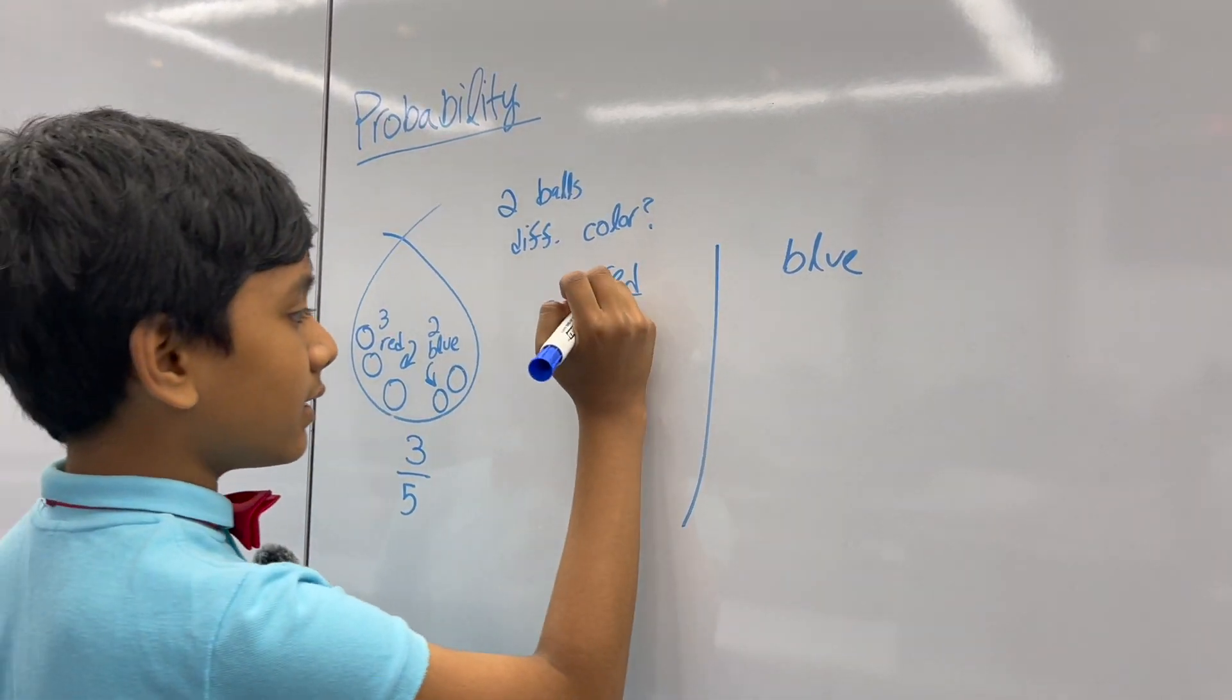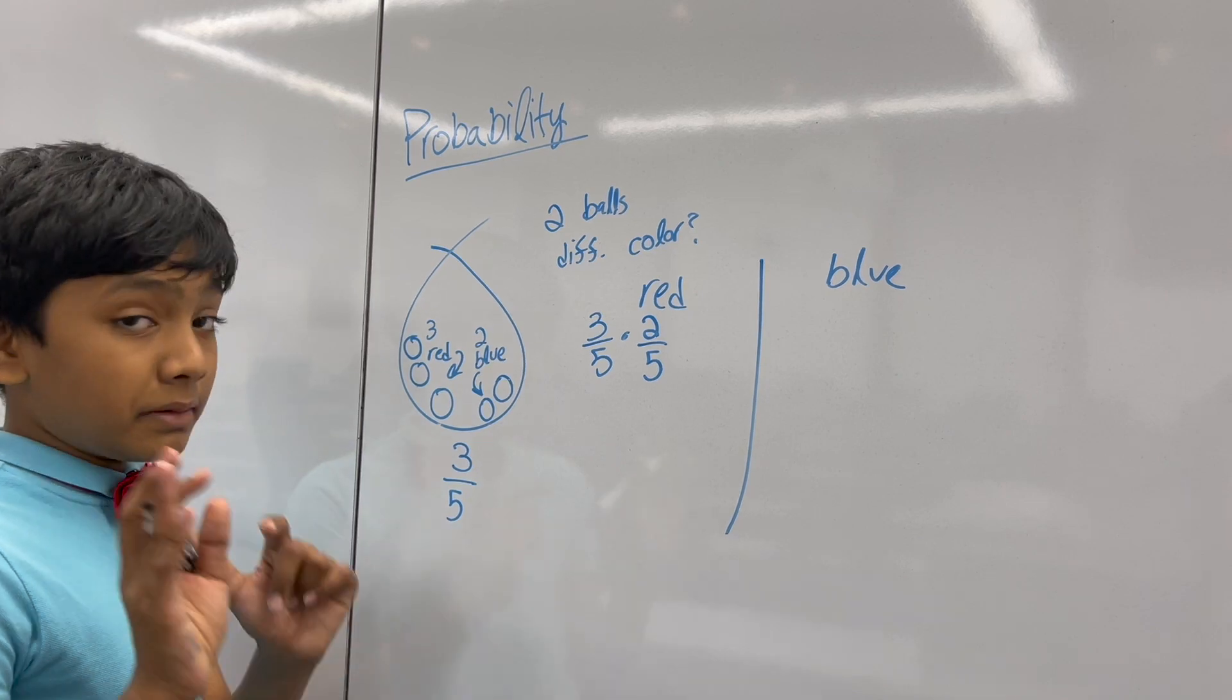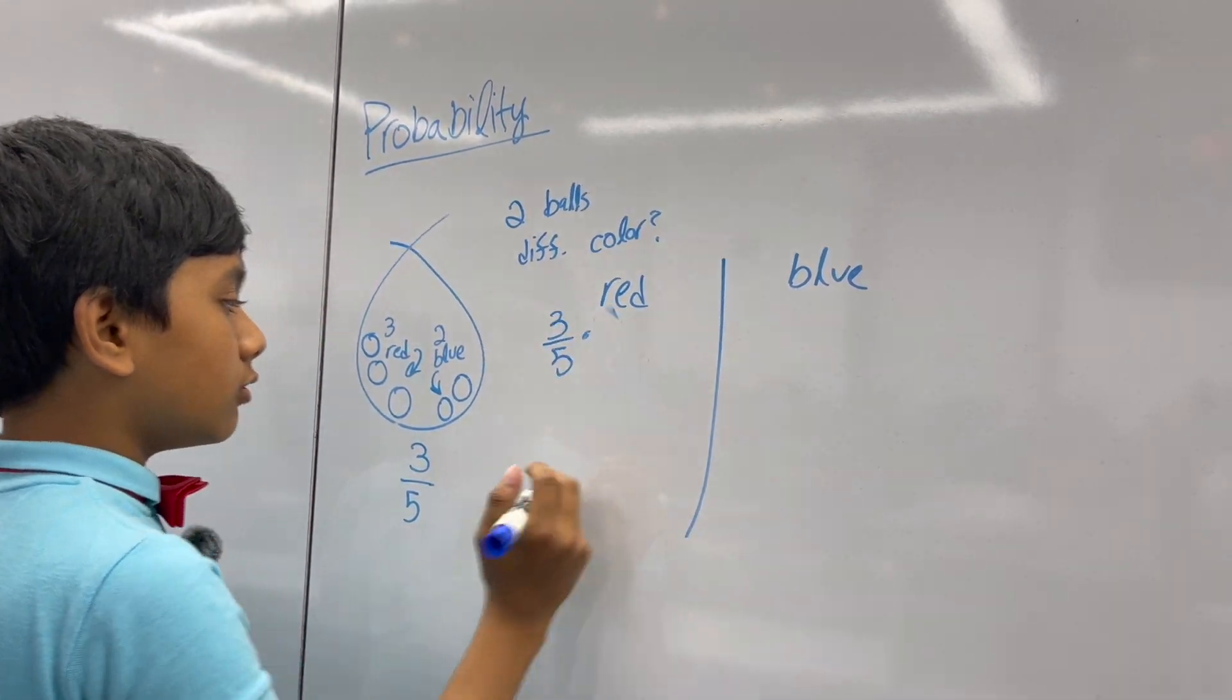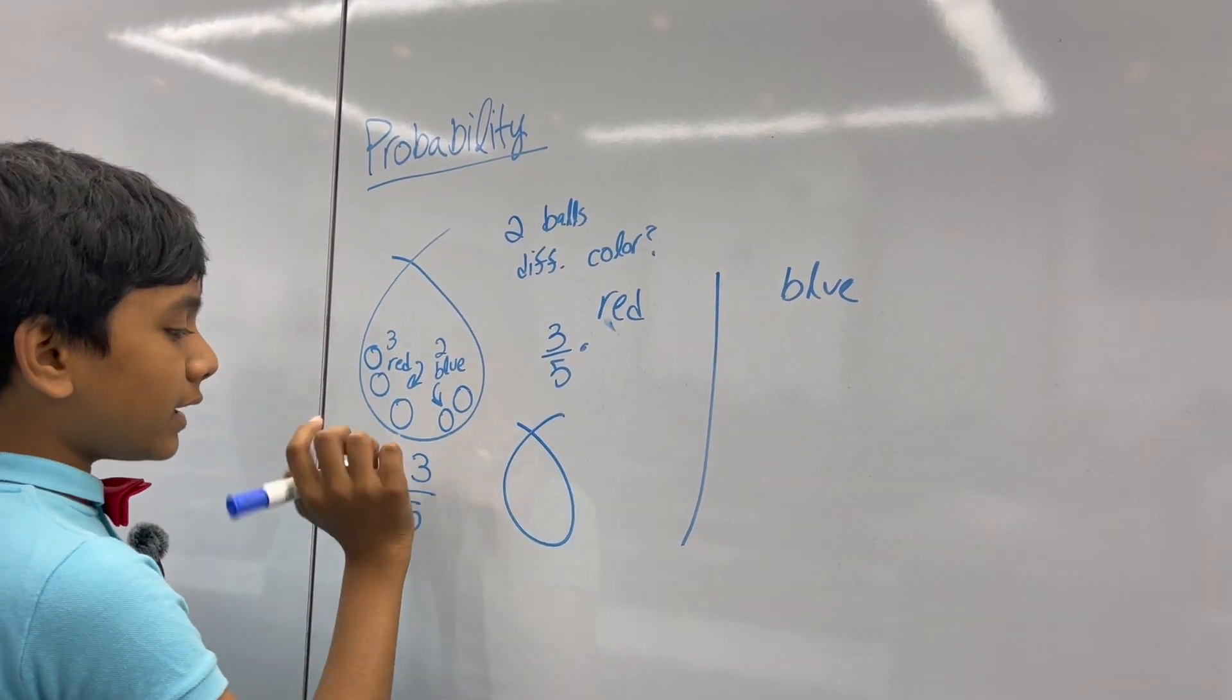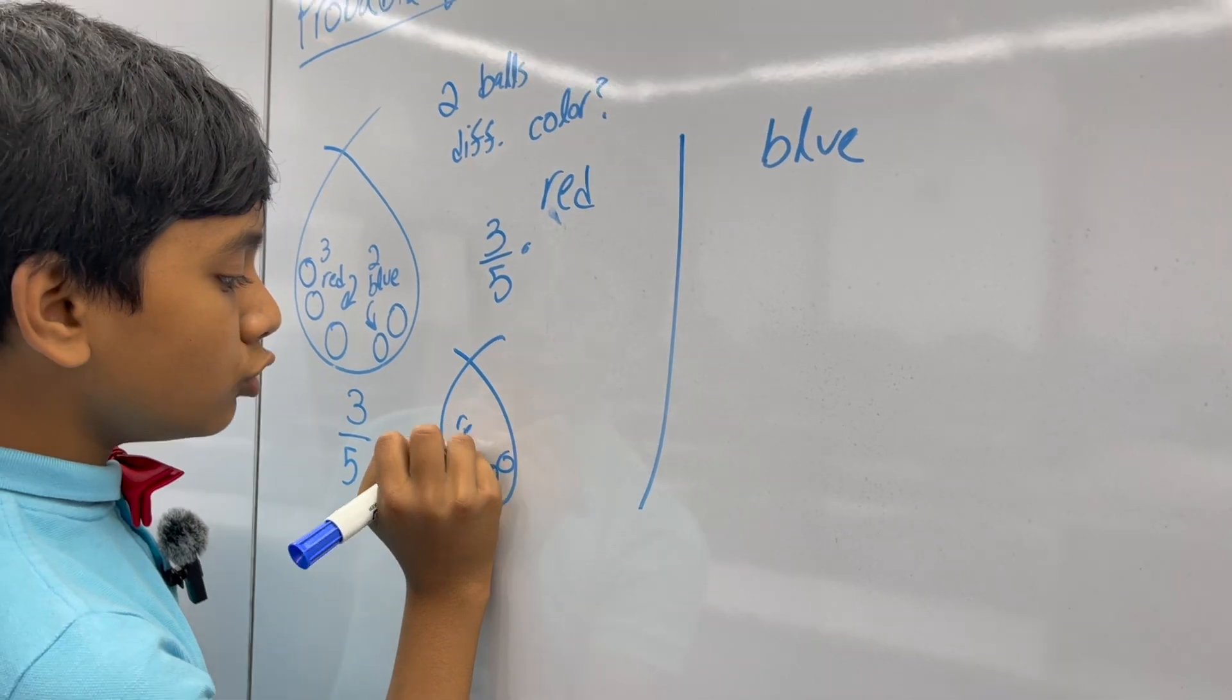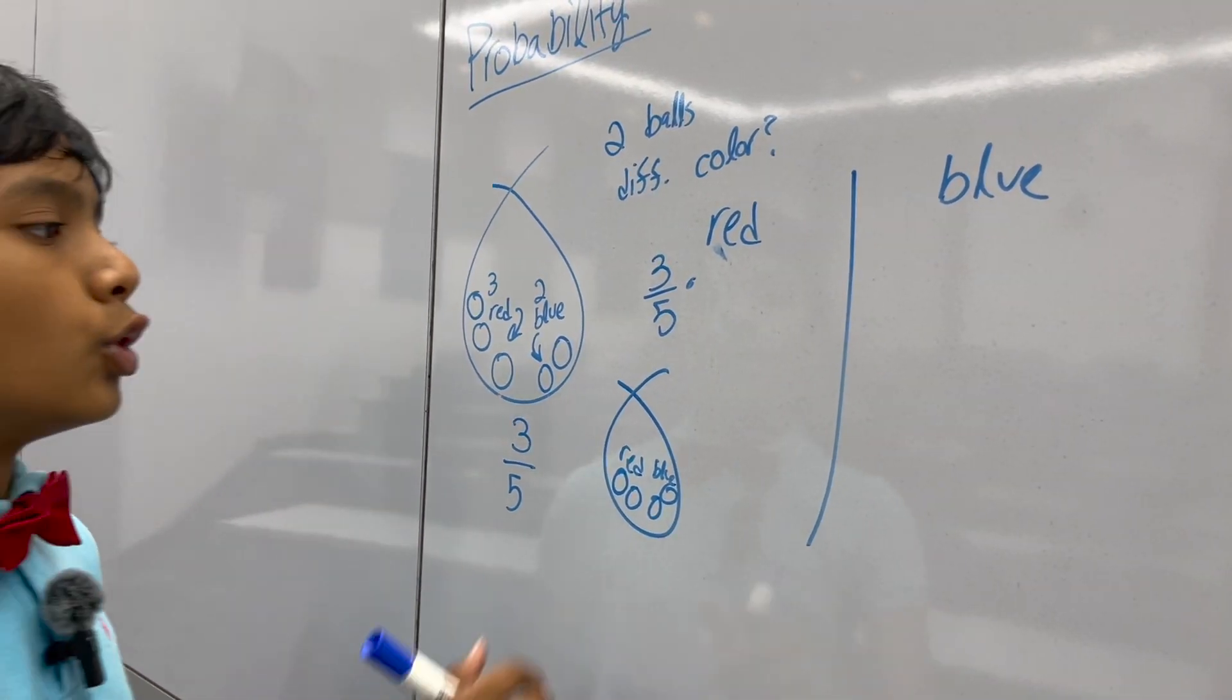Now, you might think that the blue is going to be two out of five, but actually, that's wrong. Do you know why? Well, it's because if you take one red ball out of the bag already, there will be two red balls and two blue balls left, which make four in total.